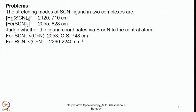Now let us look into some problems related to stretching frequencies of different groups. Here, two metal complexes of thiocyanate are given — a mercury complex with Hg²⁺ and an iron complex with Fe³⁺. The corresponding stretching frequencies are: for the mercury complex, 2120 and 710 cm⁻¹; for the iron complex, 2055 and 828 cm⁻¹.